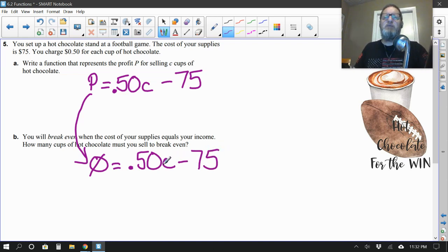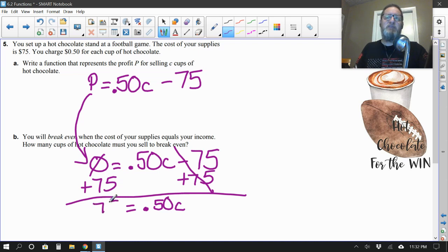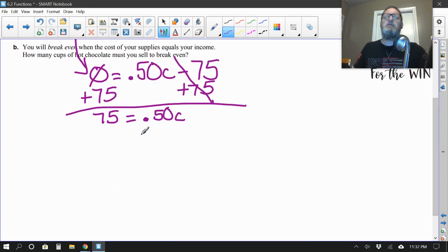So zero is equal to our 50 cents times the cups minus the 75. Okay, let's look at this. What should we do next? Well, it looks like if I want to get the letter C by itself to figure out how many cups of hot chocolate I have to sell, I'm going to add the 75 to both sides. That will eliminate it from this side. That would leave me 50 cents times number of cups equals zero plus 75, which is 75. And clearly, I need more room. So let me scroll down a little bit. All righty. Now to get the C by itself, I'm going to divide by 50 cents on both sides. You do the same thing to both sides of the equation.